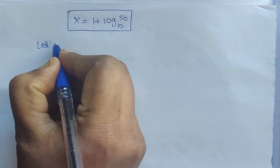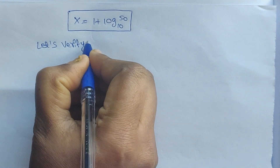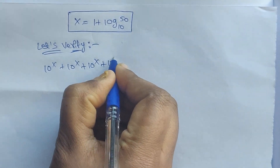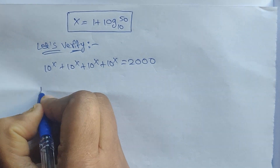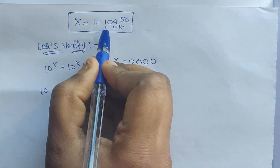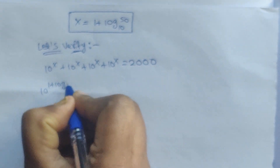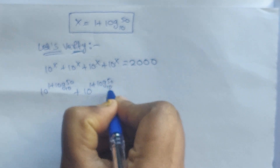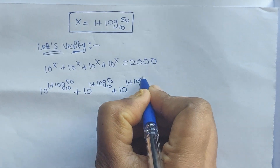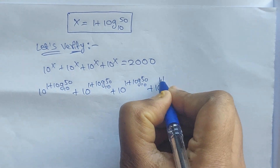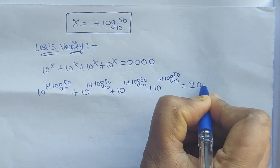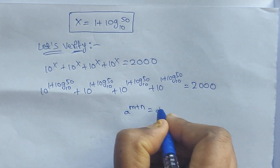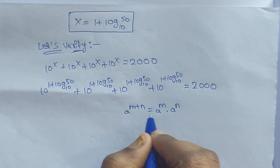Let's verify. We substitute back: 10 to the power of x plus 10 to the power of x plus 10 to the power of x plus 10 to the power of x equals 1000. Substituting x equal to 1 plus log 50 base 10 into the equation, and using the formula a to the power of m plus n equals a to the power of m times a to the power of n.